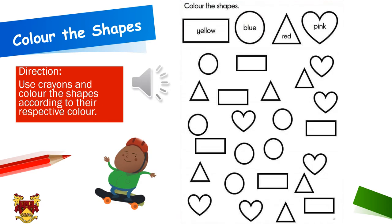Color the shapes! Dear students, in this page you can see four different shapes: rectangle, circle, triangle, and heart. You are going to find all the rectangles and color them yellow, then look for all the circles and color them blue, then find all the triangles and color them red, and then look for all the hearts and color them pink. It's going to be a very colorful page and I would love to see it!